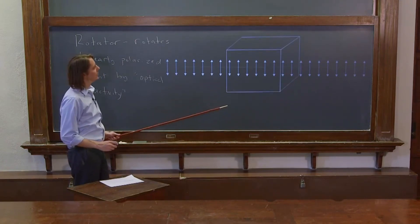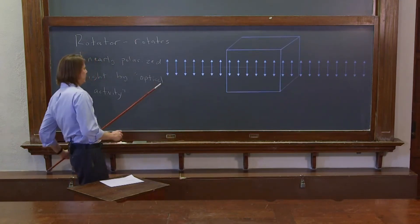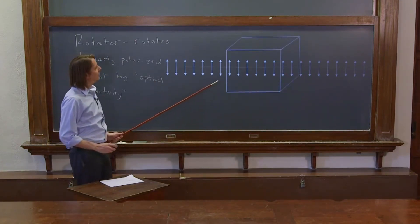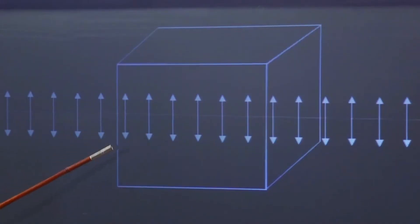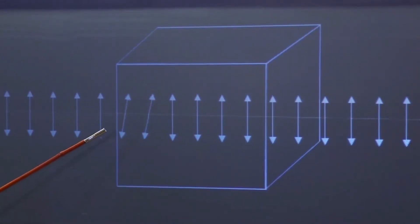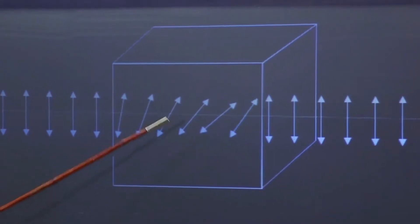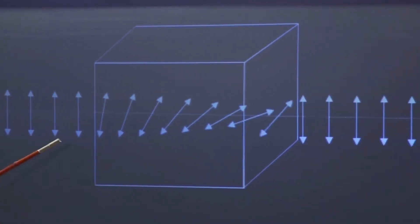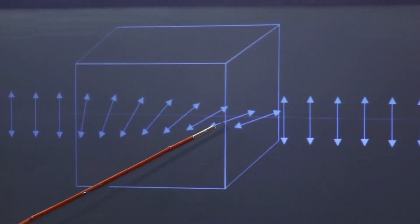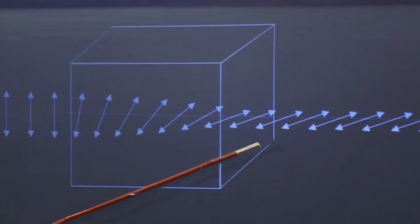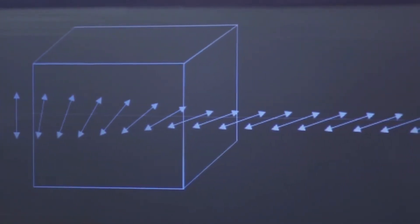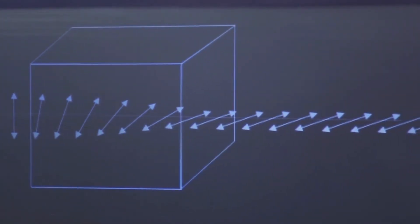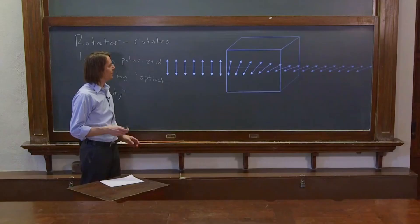If we bring in a material that has optical activity, what will happen is, as the linear light goes through, it will rotate. The polarization direction will turn a little bit, and more and more. It basically turns as it goes through the medium, and when it comes out, it's now rotated. So it's really the simplest kind of device you can imagine for rotating linear light.